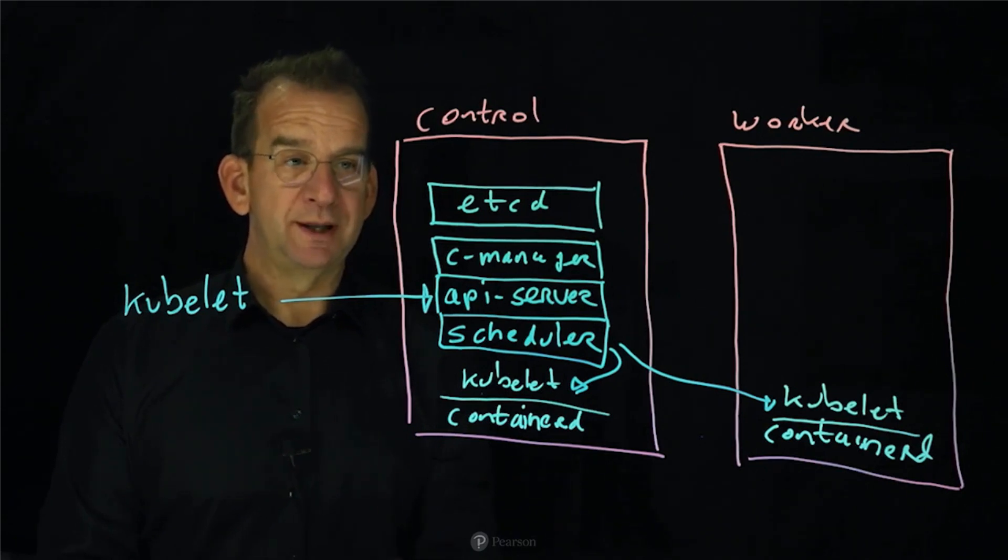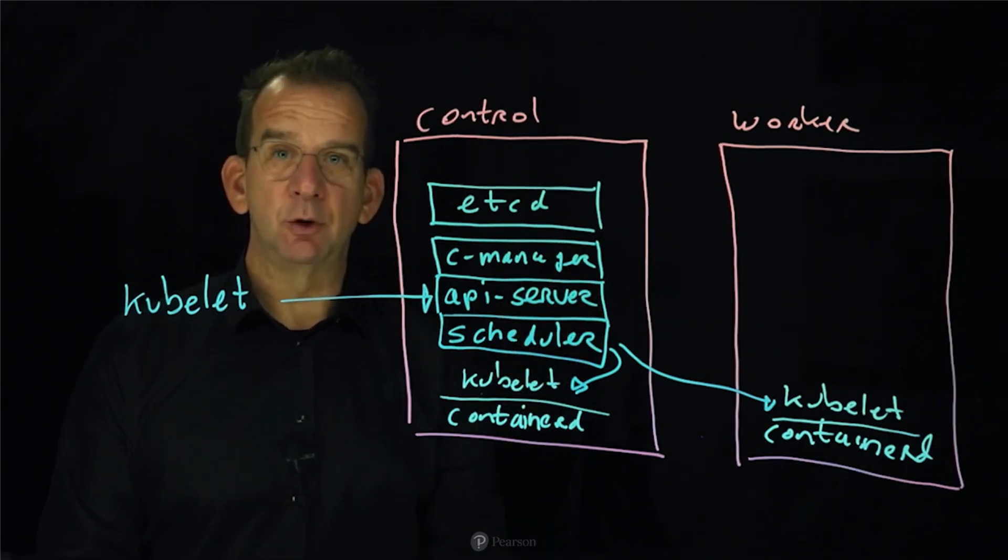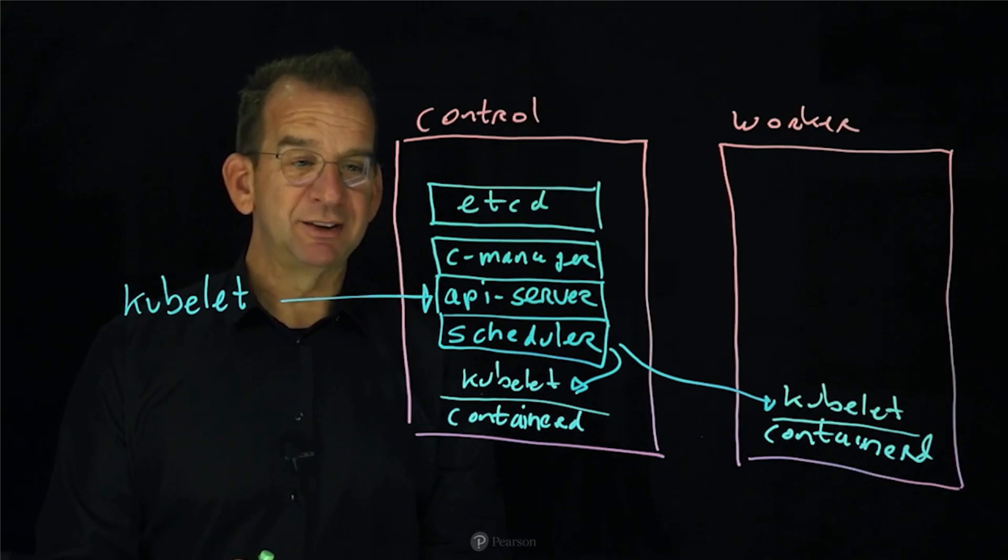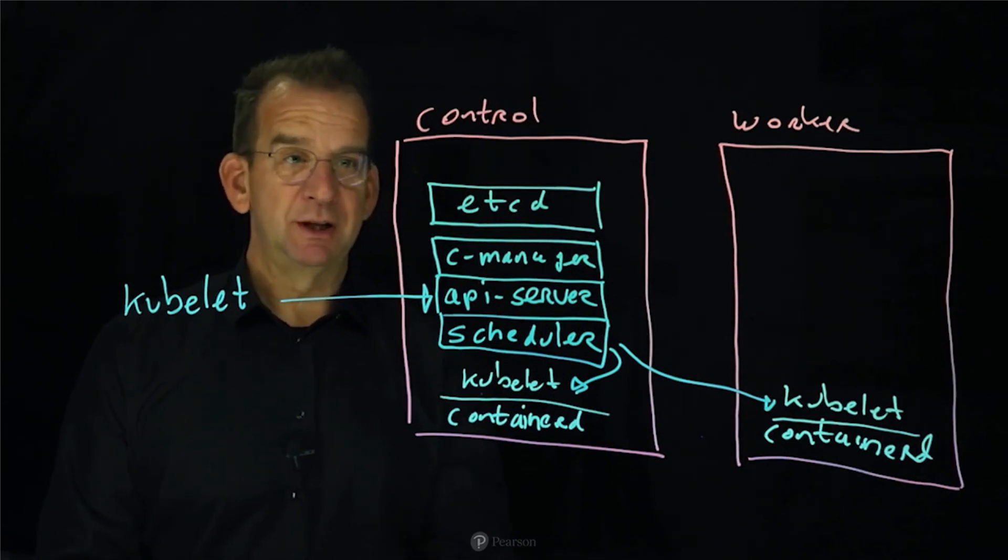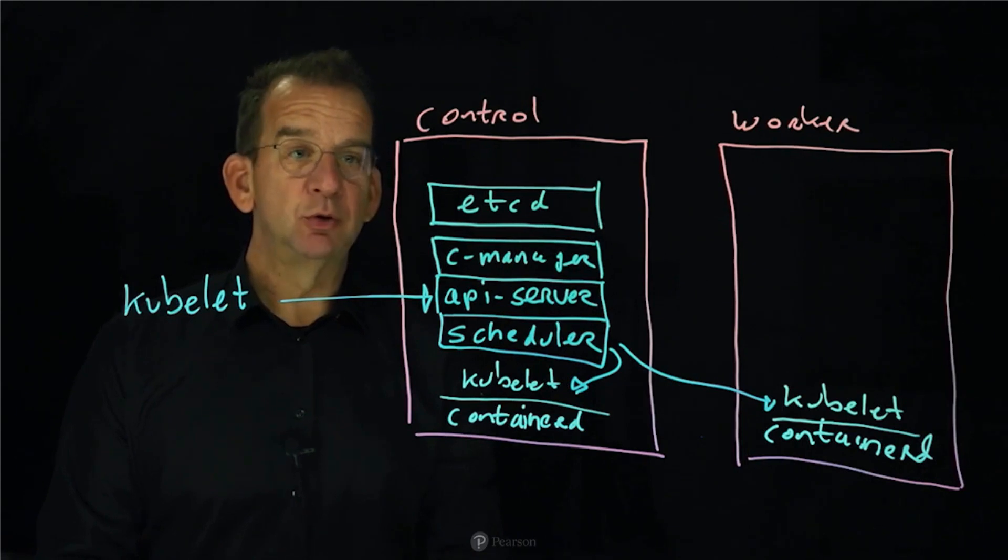And when you run a pod, then the controller manager is going to be involved to make sure that it is directed the right way. The scheduler will get in contact with the kubelet to put it on one of the worker nodes. And at the same time, your pod definition, as well as your pod status, is written to the etcd.